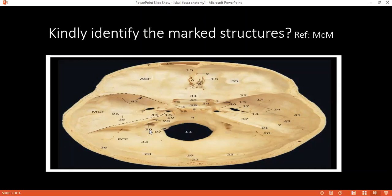Then can you please identify structure 30 pointing at this? Yes, ma'am. Inferior petrosal sinus and cranial nerves, glossopharyngeal, vagus and accessory nerves. Very good.